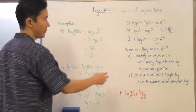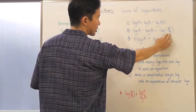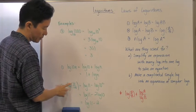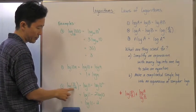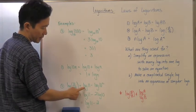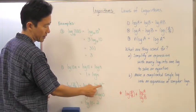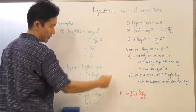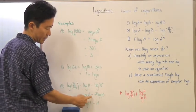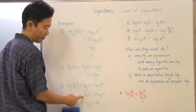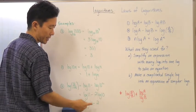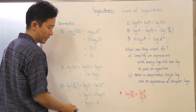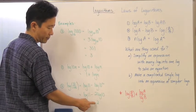The last example uses law two — the quotient rule. If we have log of 110 over 100, that equals log 11 minus log of 10 squared. Now I'll use the power law to bring the exponent in front, giving log 11 minus 2 log 10. Since log 10 equals 1, this simplifies to log 11 minus 2.